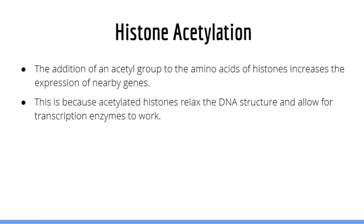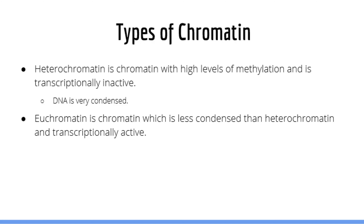Another epigenetic mechanism is histone acetylation. Just like the addition of a methyl group to DNA can influence transcription, the addition of an acetyl group to a histone protein can increase transcription. This occurs because acetyl groups make the DNA structure less tight, allowing RNA polymerase to bind and start transcription. There are two types of chromatin: heterochromatin, which is heavily methylated and transcriptionally inactive, and euchromatin, which is more relaxed due to high levels of histone acetylation and therefore transcriptionally active.